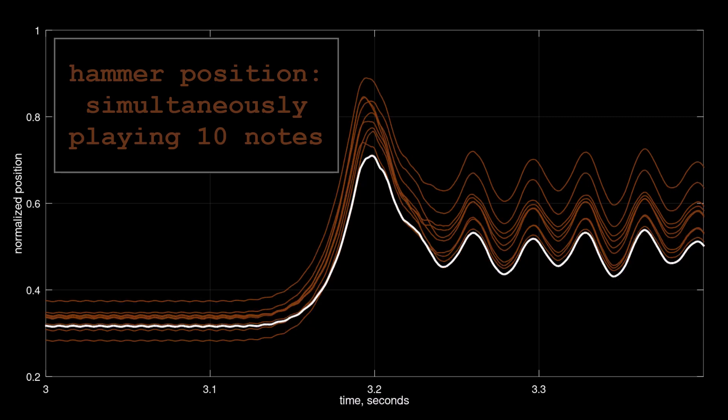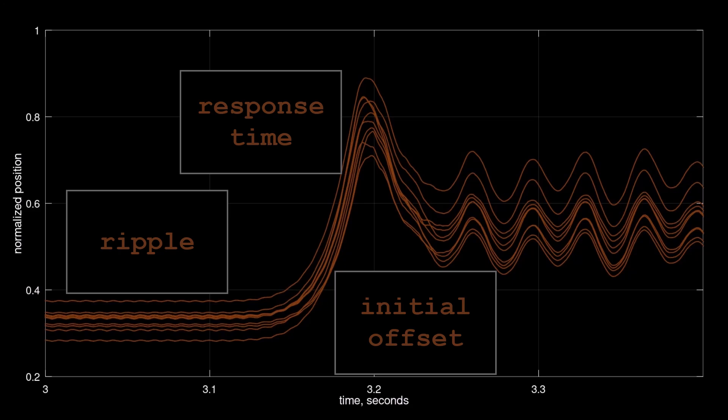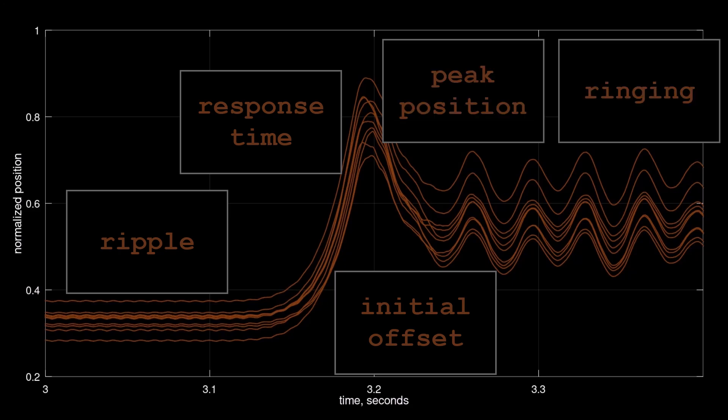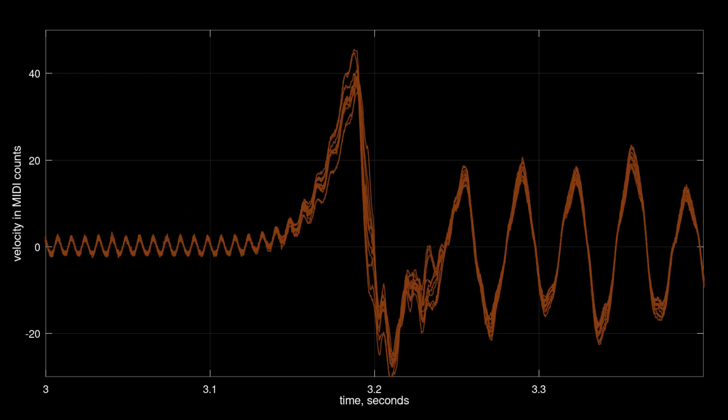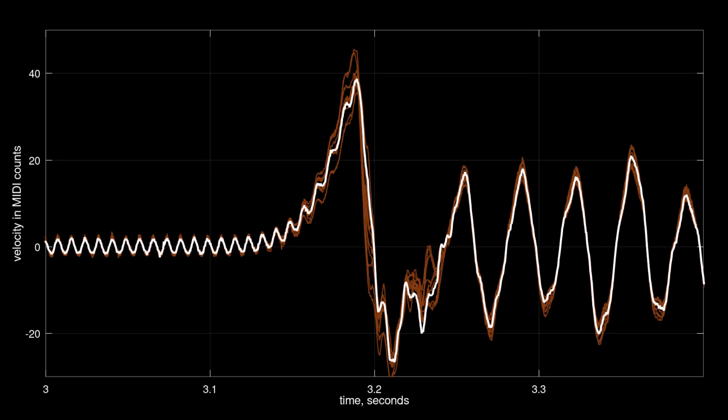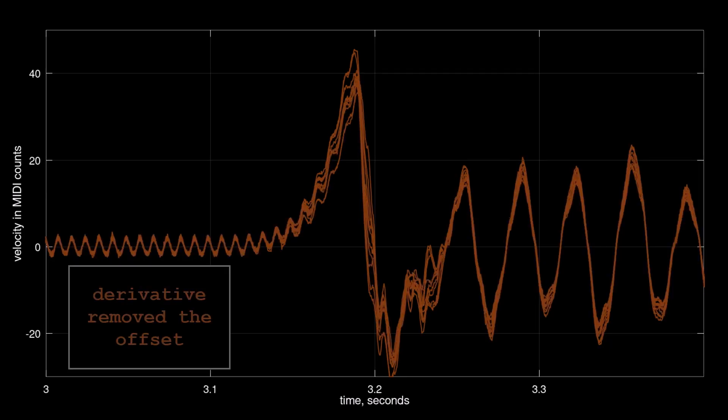Not good. I see at least five problems: the starting positions are different, noise, notes are not simultaneous, didn't expect that, look at this ringing, and the peaks are not consistent. My firmware computes velocity from position with a low-pass filtered numerical derivative. Here are the velocity values for 10 notes.